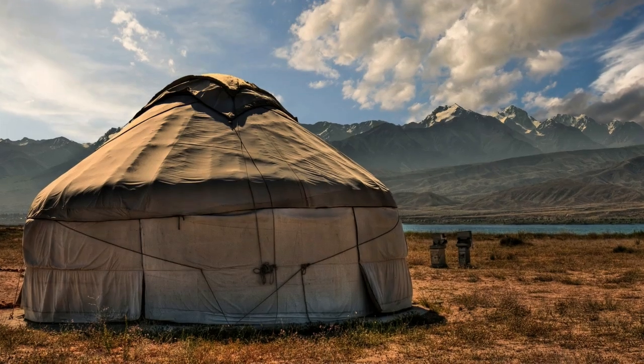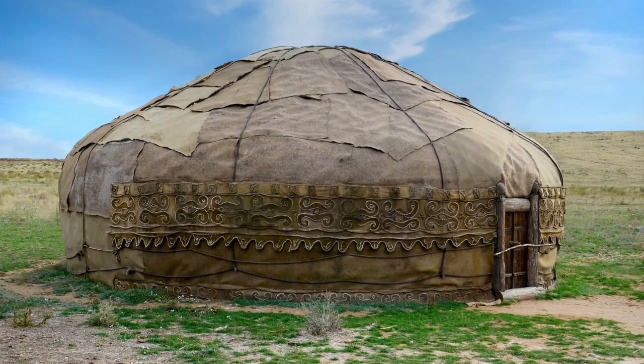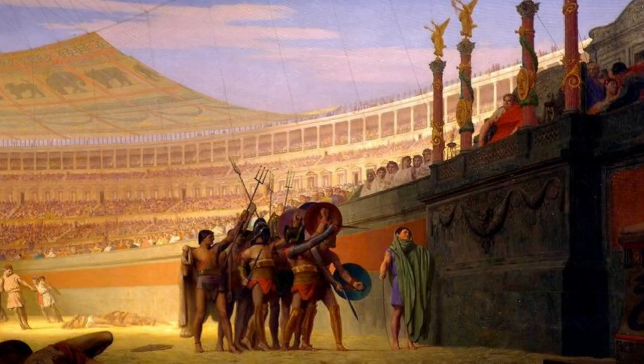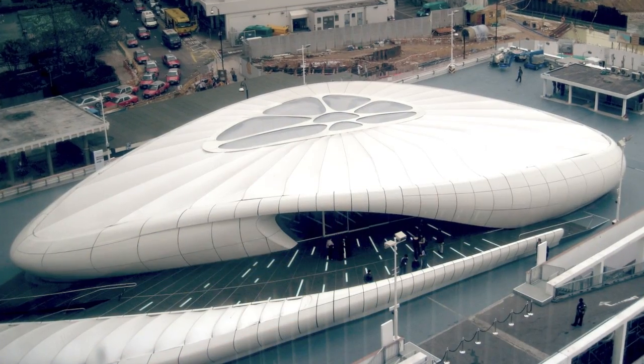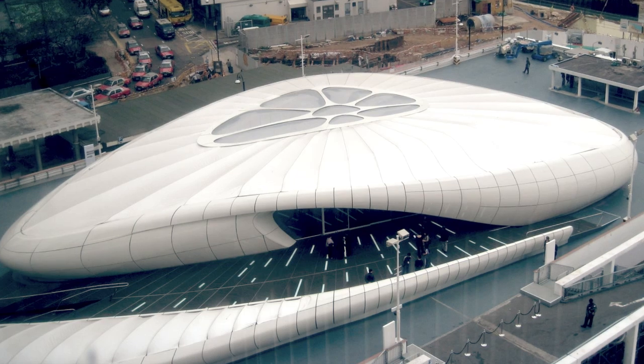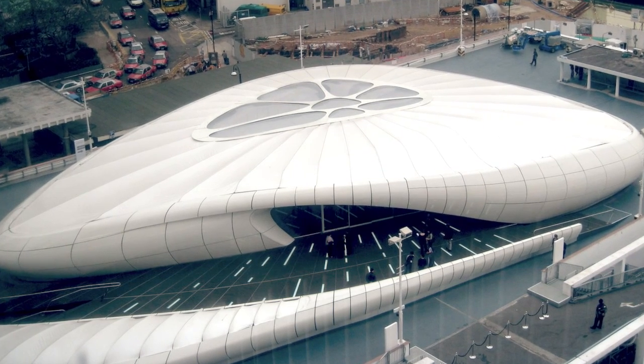Building with textiles is a tradition which goes back thousands of years, from yurts made out of animal skins through to the Roman shade structures installed at the Colosseum. But the inclusion of technical fabrics within mainstream architecture has a more recent history.